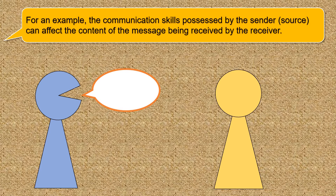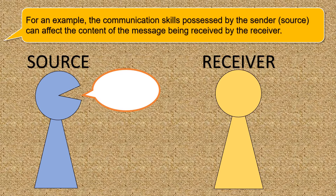These are supposed to be individuals having a conversation. So the channel here would be hearing. Here we have the source and the receiver. Let's say the source has a poor communication skill — this will be translated to the message, and the message might have poor content. When it is received by the receiver, they might not understand.